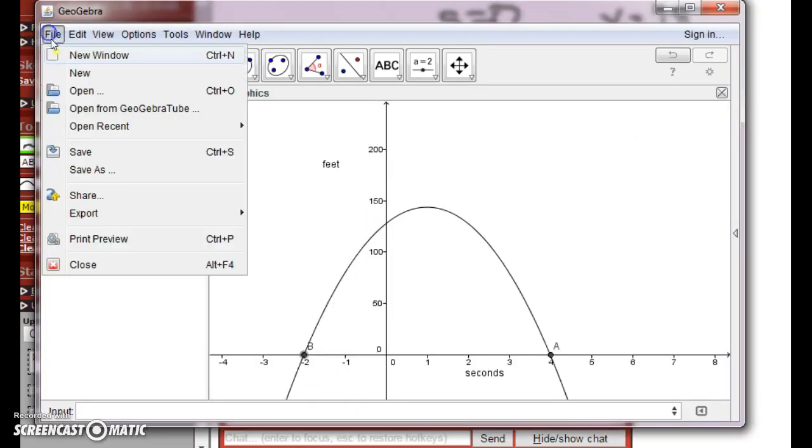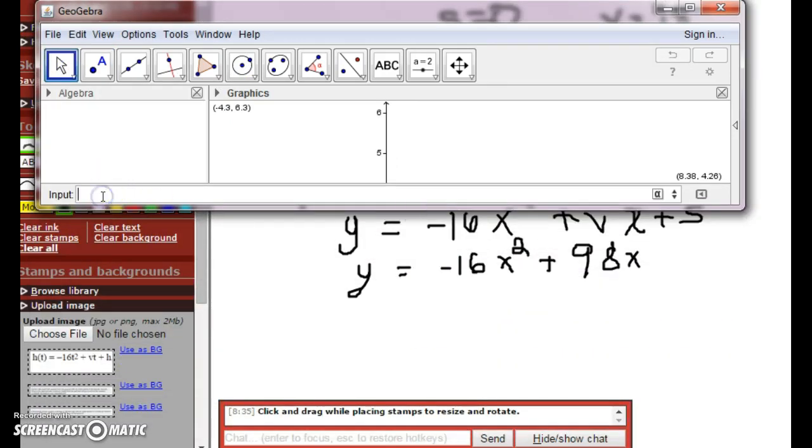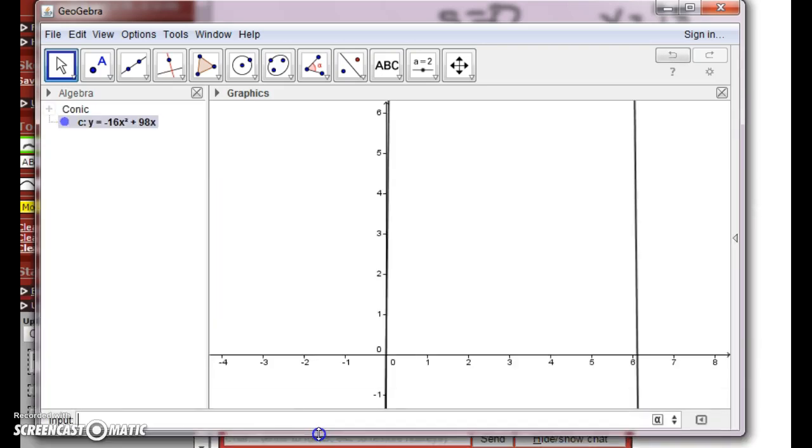Bring back our GeoGebra. File new. Don't save. I'm just going to bring this up so I can see my equation. So y = -16x² plus 98x. Enter. Now I'll make this big. And I always move my graphics view so I can see what I'm doing here.